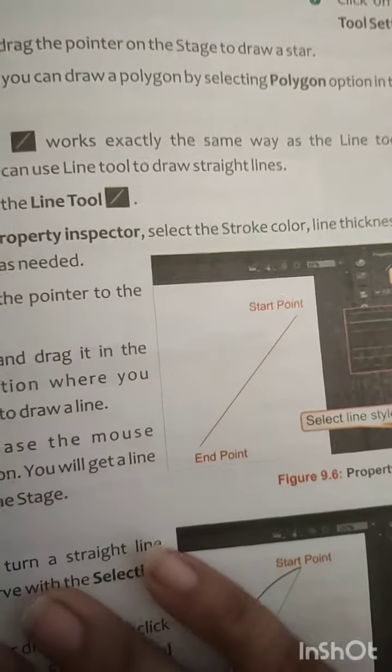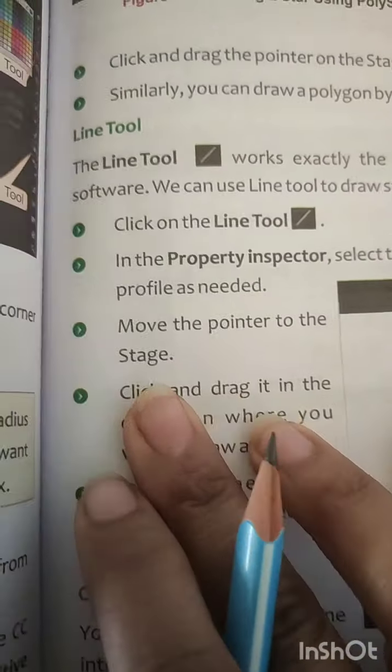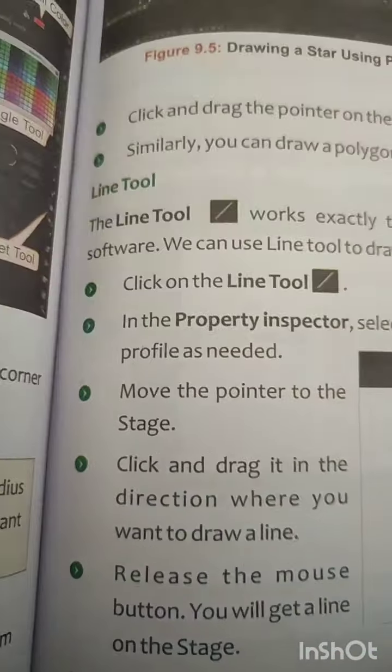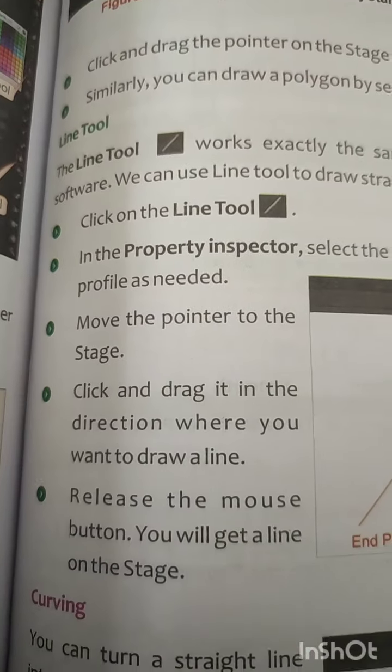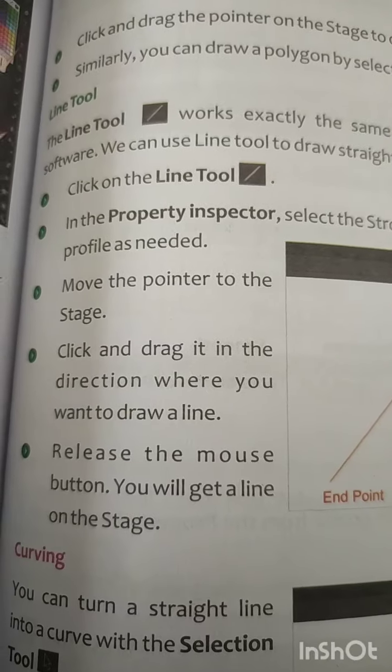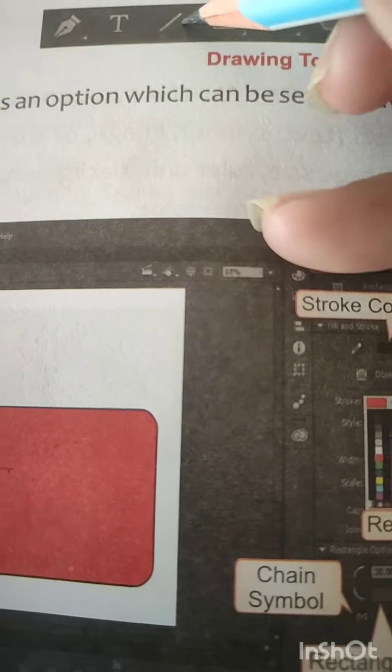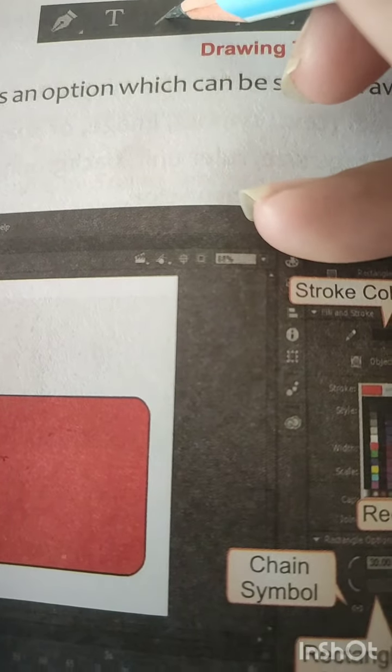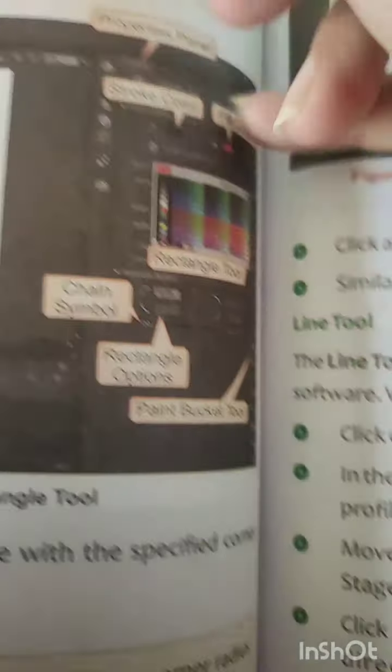Next is the line tool. The line tool is used to make lines onto our stage area. When you click on this line tool, you can use it to make lines on the stage.